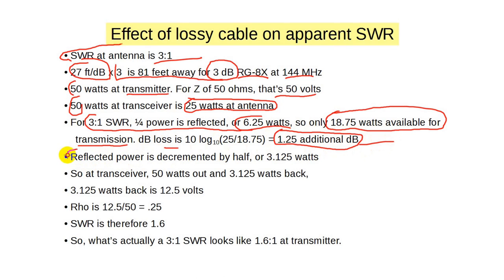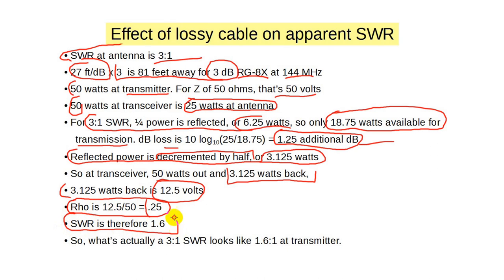Now the 6.25 watts of reflected power is cut in half by the 3 dB line loss on its way back to the transmitter. So the transmitter sees only 3.125 watts coming back. At 50 ohms, that equates to 12.5 volts. So rho, our reflection coefficient at the transceiver, is 0.25. Therefore, our SWR at the transceiver is 1.6 to 1. What looks like a nice 1.6 SWR is actually 3 to 1 at the antenna. Bottom line, if SWR at the antenna is greater than 1 to 1, a lossy cable will make SWR appear better than it really is.